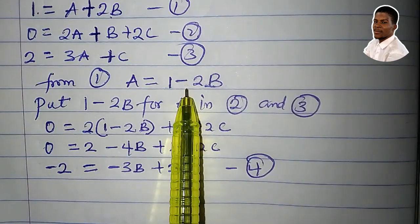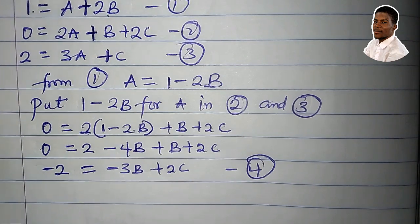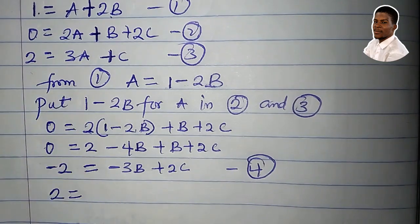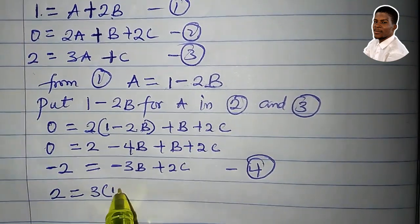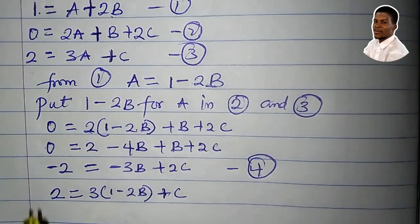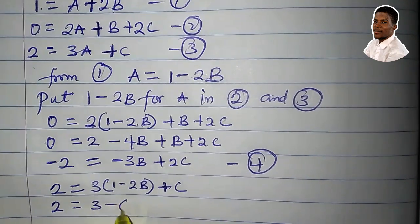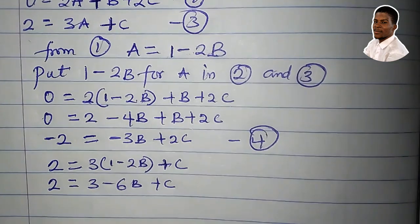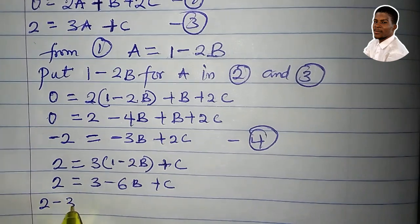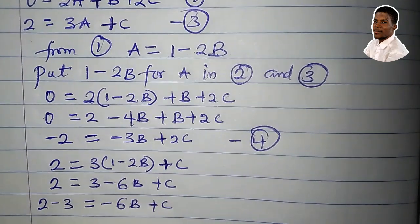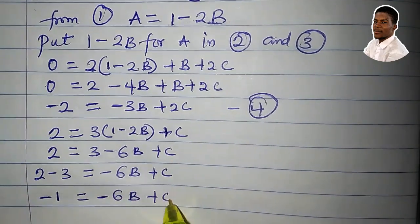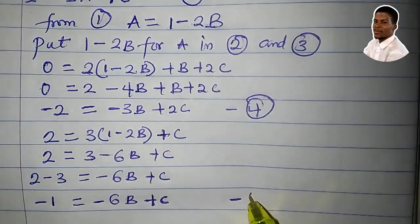Now substituting into equation 3: 2 = 3(1 − 2b) + c. Expanding: 2 = 3 − 6b + c. Collecting like terms: 2 − 3 = −6b + c, so −1 = −6b + c. This is equation 5.